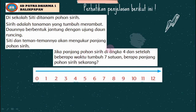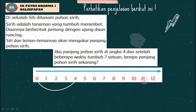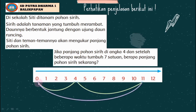Awal mula pohon sirih berada di angka 4 satuan, jadi kita gambar garis lengkung dari 0 ke angka 4. Setelah beberapa waktu tumbuh 7 satuan, maka dari angka 4 kita geser ke kanan sebanyak 7 kali: 1, 2, 3, 4, 5, 6, 7, dan berhenti di angka 11. Jadi dari 0 sampai 11 ada 11 satuan. Maka 4 + 7 = 11.